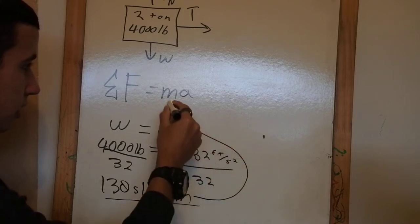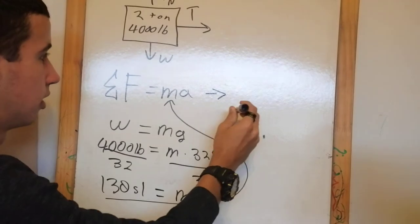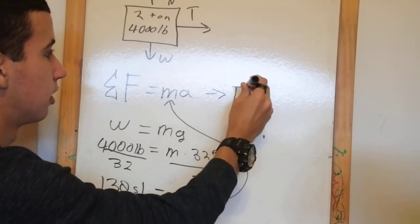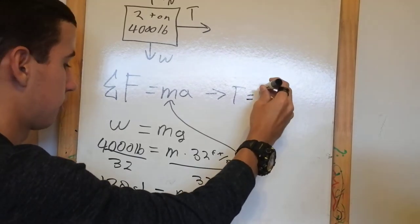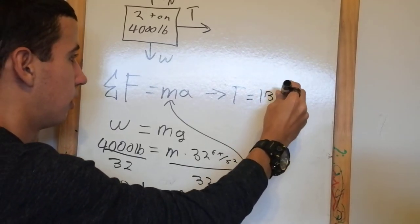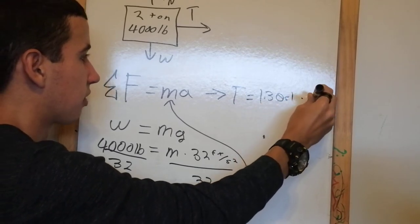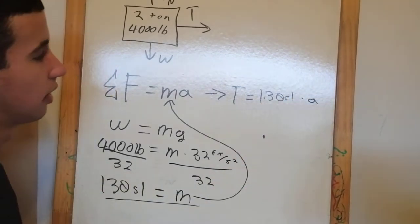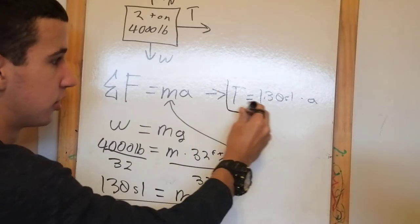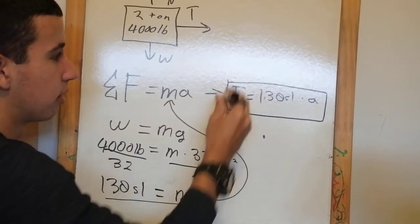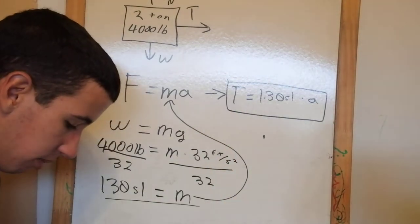I'm going to take that and plug it in here. So tension is the force we're looking at, equals 130 slugs times acceleration. That's all we can do right now — we don't know what tension is, we don't know what acceleration is. Write this down because I'm going to erase it, and we're going to look at the second object, but we're going to come back to that equation and do some substitution.